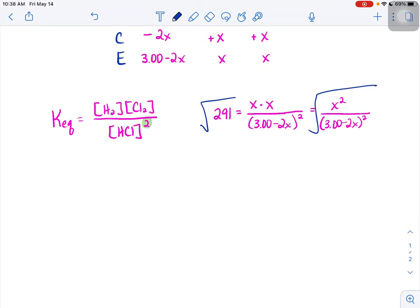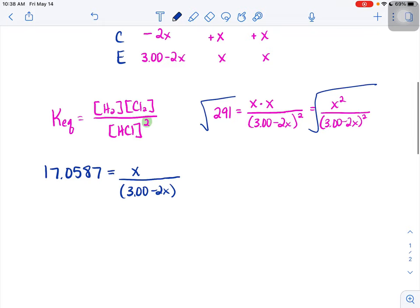Let's start to simplify. If we do the square root of 291, throw that in our calculator, you'll get a number a little bit over 17. When we square root the right-hand side, the square root of x squared is just x. And then we still have that 3 minus 2x down here. It's just no longer squared. We have to get rid of that 3 minus 2x, so I'm going to move it out of the bottom of my fraction.